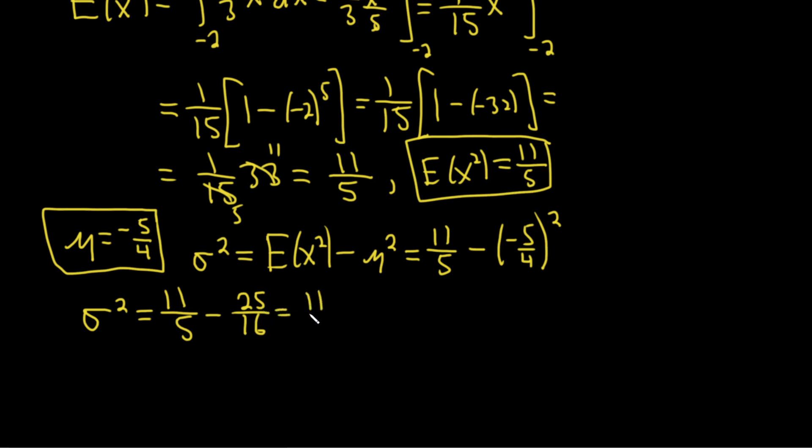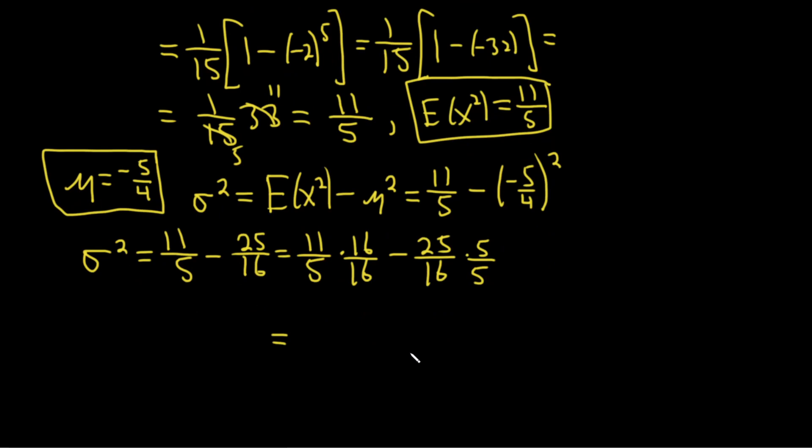This is 11 over 5 times 16 over 16 minus 25 over 16 times 5 over 5. We need to figure out 11 times 16, which is 176, and 25 times 5, which is 125.